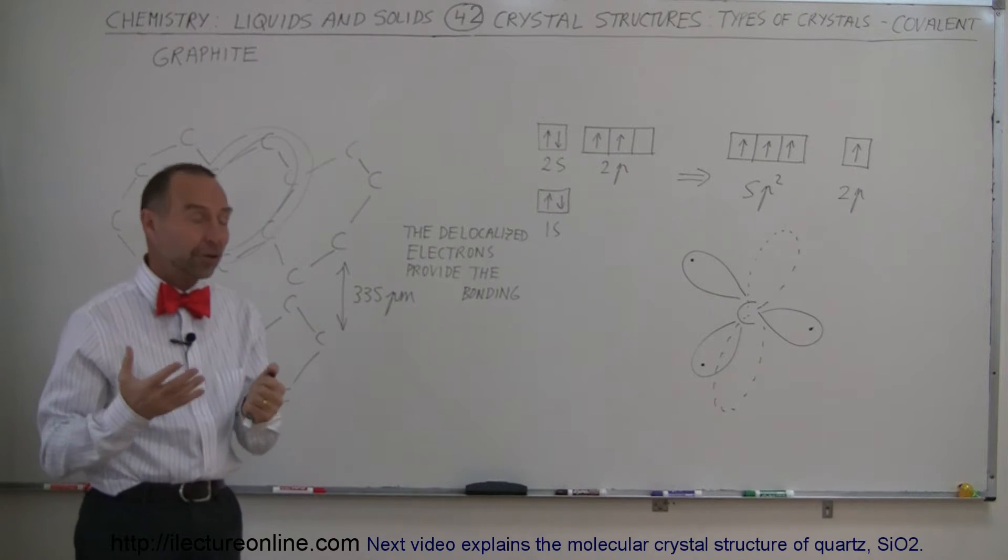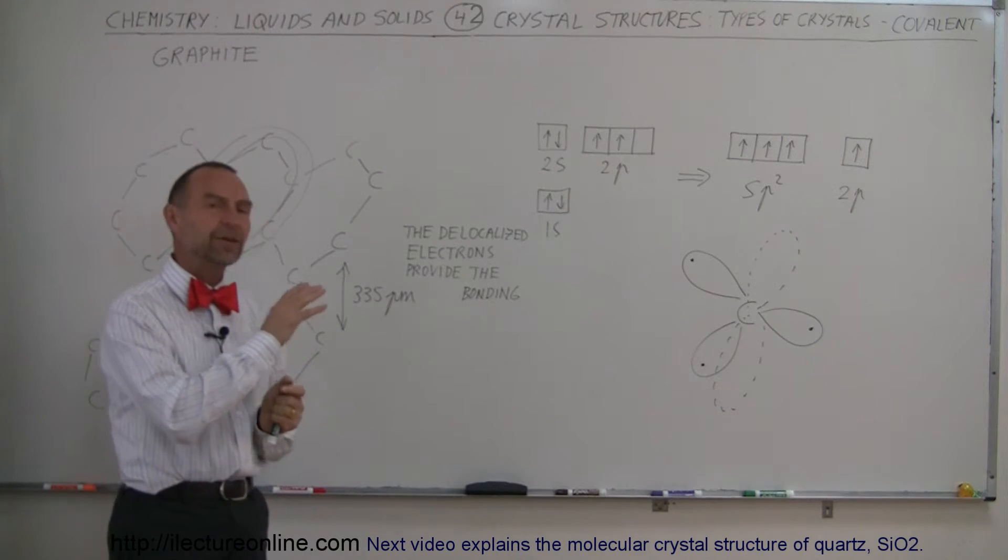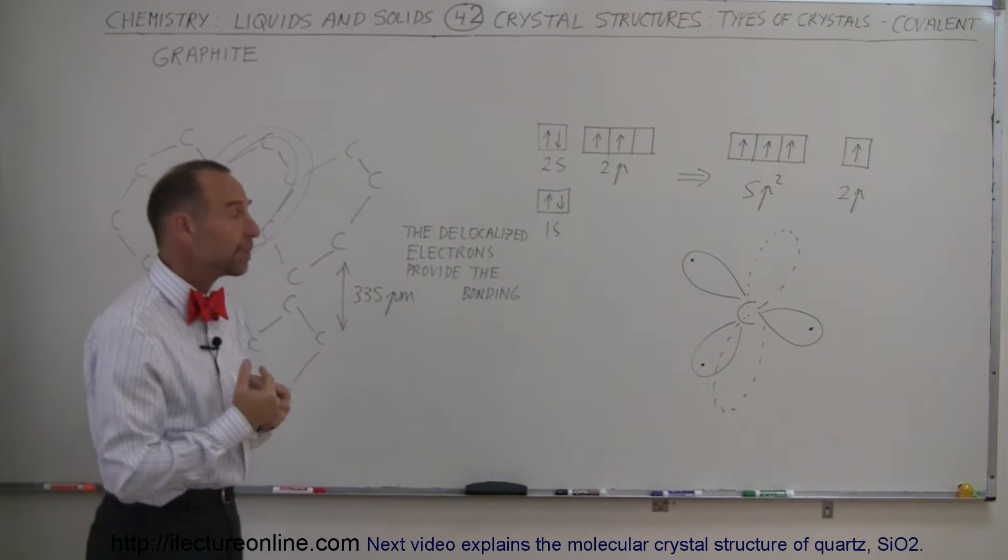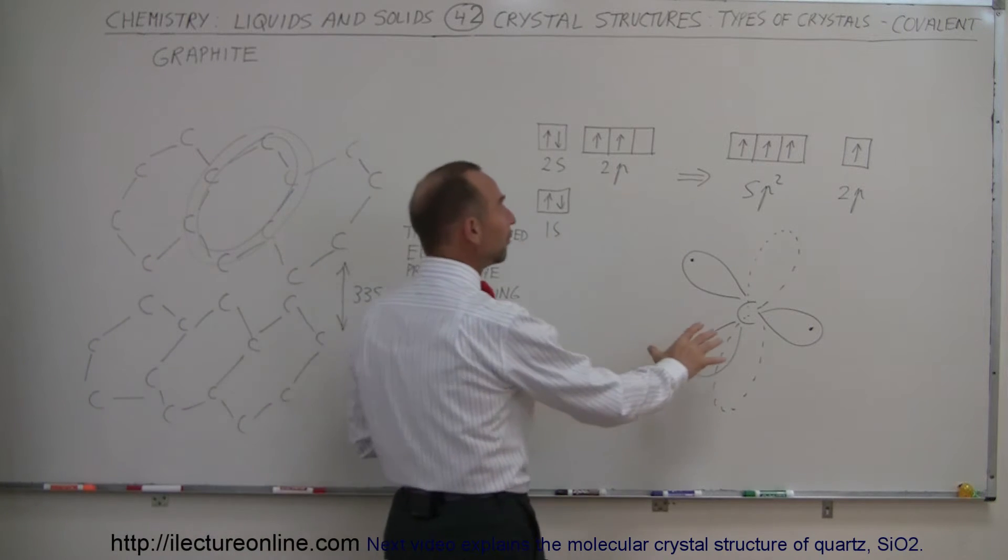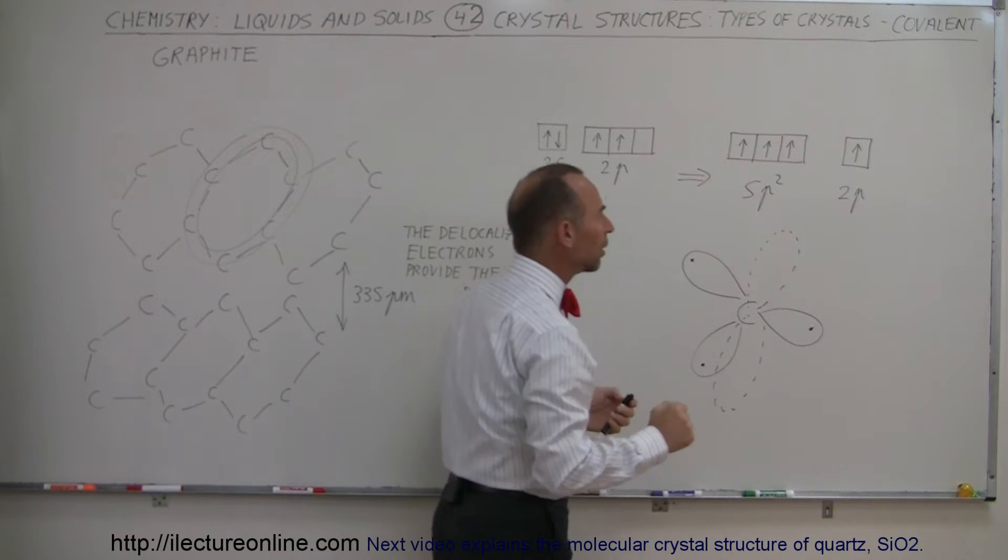And again we're going to take carbon as an example and what's different about the carbon here compared to the carbon in diamond is that not all of the four available electrons are hybridized into sp orbitals.